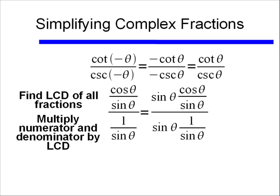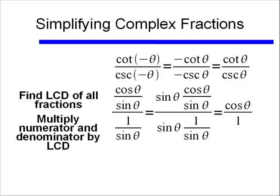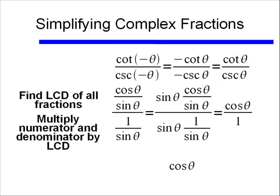If I multiply cosine theta over sine theta by sine theta, and multiply 1 over sine theta by sine theta, I end up with cosine theta over 1, or simply cosine of theta. So what we started at — cotangent of negative theta divided by cosecant of negative theta — simplifies down to a simple cosine of theta.